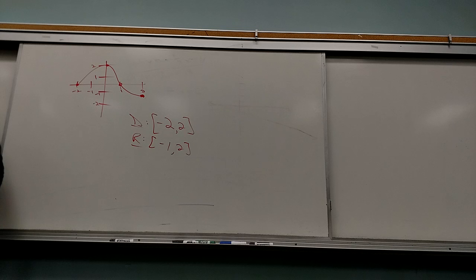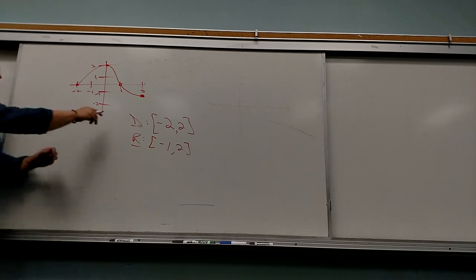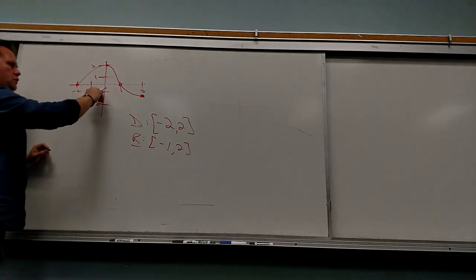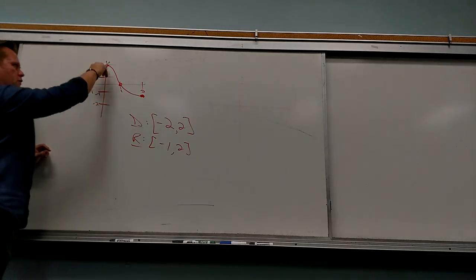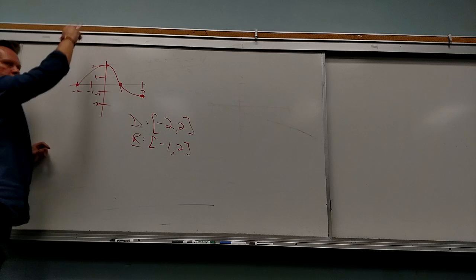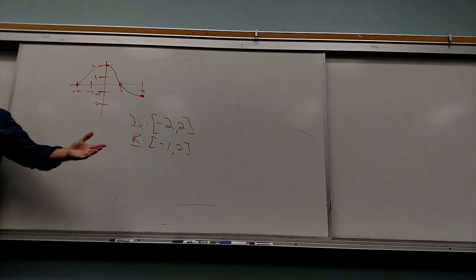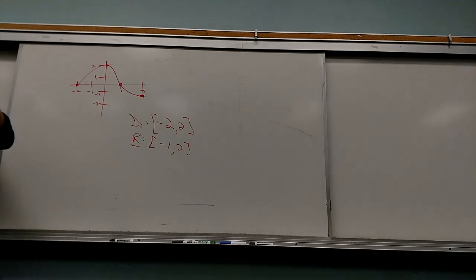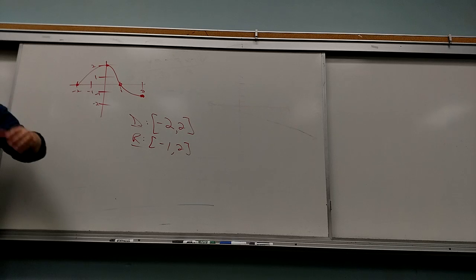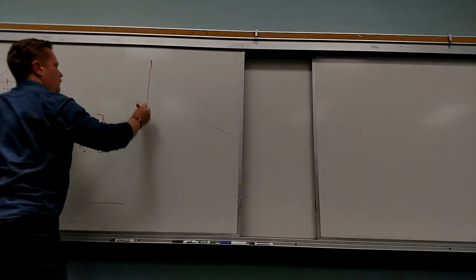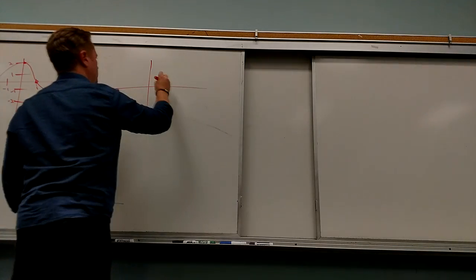I know it sounds like kindergartners, but I like the idea of a little dude walking on the axis — there he sees it, and that's the last time he sees it. That's how you figure it out. Just walk along the right axis for the right thing — domain, range.